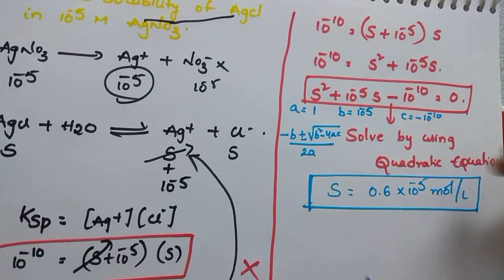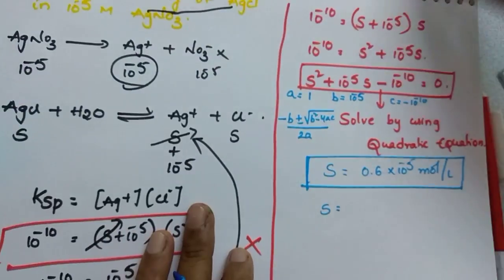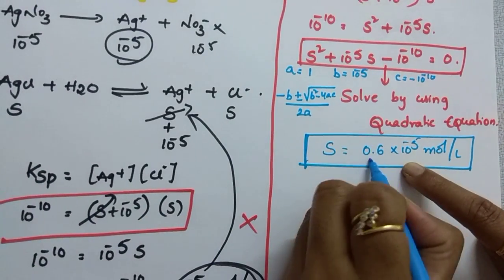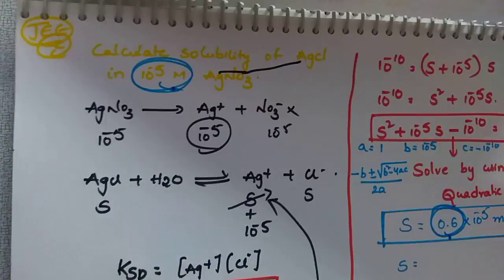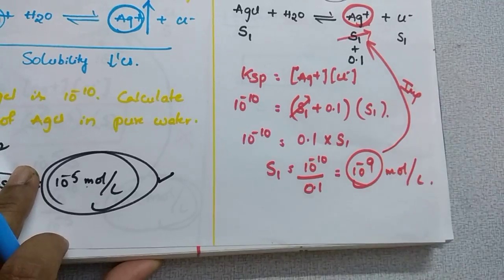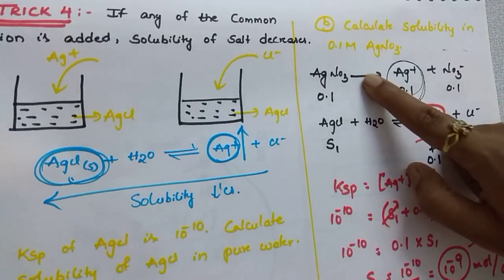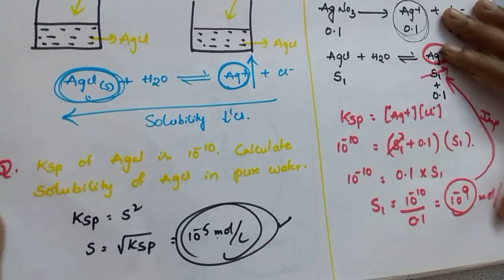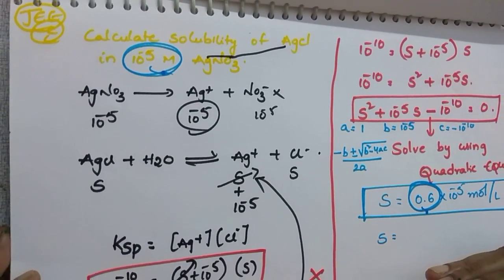Without any common ion, the solubility of AgCl was 10^-5 mol/L (from the previous question). After adding the common ion (AgNO3 at 10^-5 M), solubility decreases slightly. If you add a larger amount of AgNO3 — say 0.1 M — the solubility decreases even more. The key principle: adding a common ion decreases solubility; more common ion means greater decrease.